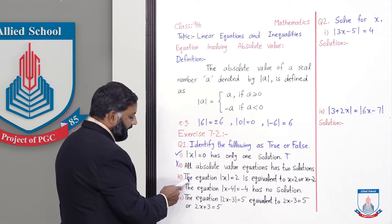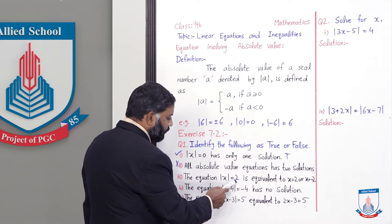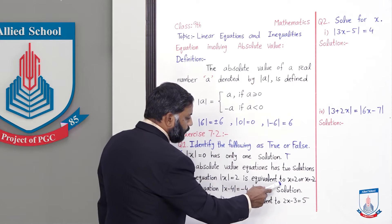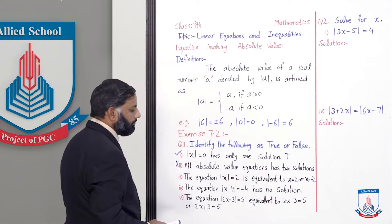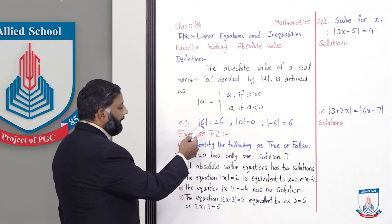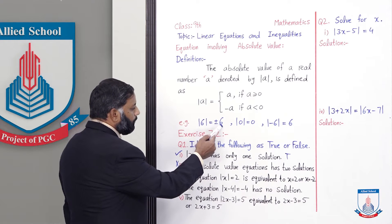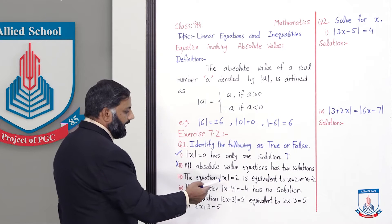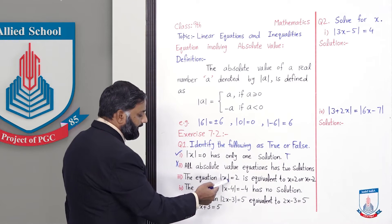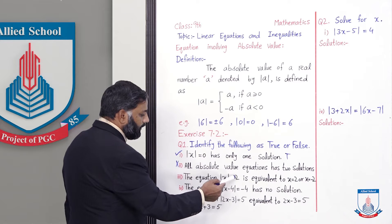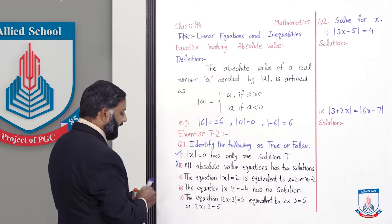Third statement: the equation |x| = 2 is equivalent to x = 2 or x = -2. This is TRUE, as shown in our example — |6| = ±6 — similarly, removing the absolute value gives plus 2 and minus 2, so both signs appear. This statement is true.